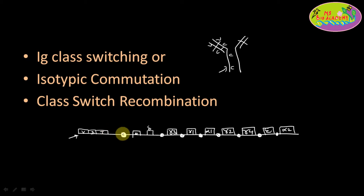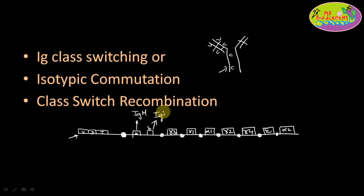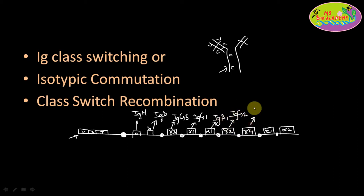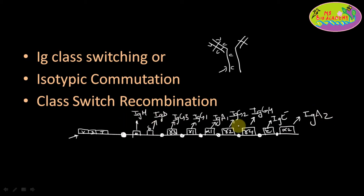Just downstream of the VDJ sequence, there is a gene segment coding for the mu heavy chain, which leads to the IgM antibody. If the delta heavy chain constant segment is transcribed, it produces the IgD antibody. Similarly, gamma 3 produces IgG3, gamma 1 produces IgG1 — these are subclasses of the IgG isotype. Alpha 1 produces IgA1, then IgG2, IgG4, epsilon produces IgE, and alpha 2 produces IgA2.